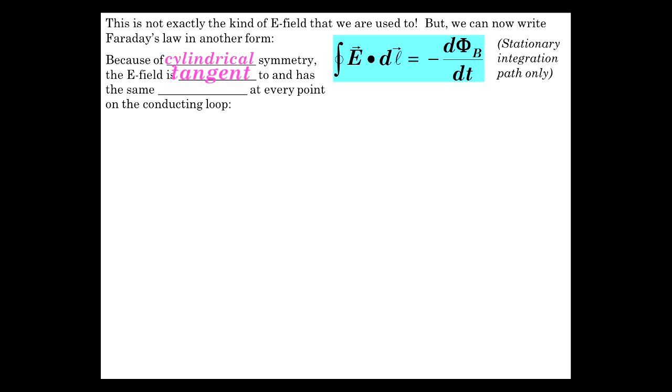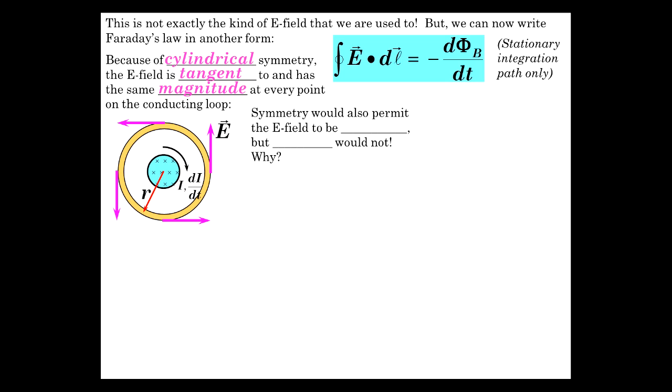Now, because of cylindrical symmetry, the E field is tangent to and the same magnitude at every point on the conducting loop, taking a cross-section of this solenoid and seeing the magnetic field here going inside, going into the screen, and there's a current flowing around like this and it's increasing, produces an electric field tangent to and constant magnitude at every point. This is the non-electrostatic field that's pushing the charge around. Now, symmetry would also permit the electric field to be radial. But Gauss would say, no, no, no. And you know why? Because if we do a Gaussian surface anywhere around here, we're going to enclose no charge. There's no charge enclosed. So it has to be tangent.